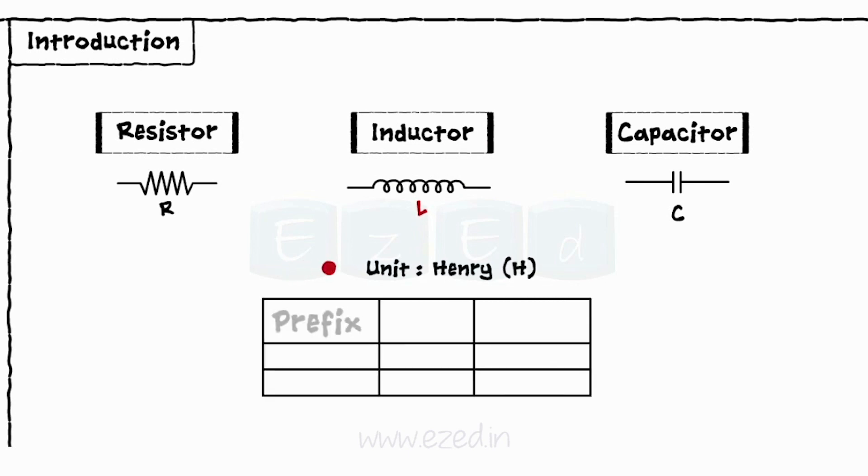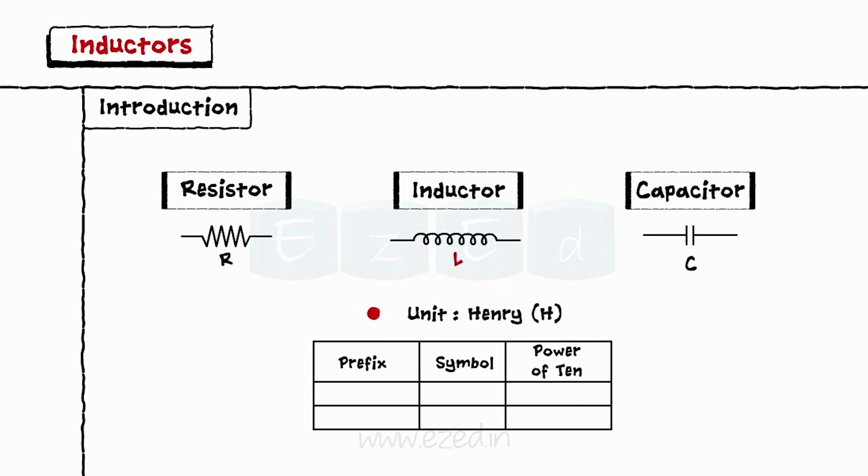But practically, Henry becomes a very large unit. We generally use smaller units like milli-Henry or micro-Henry, which are one-thousandth and one-millionth part of a Henry respectively.